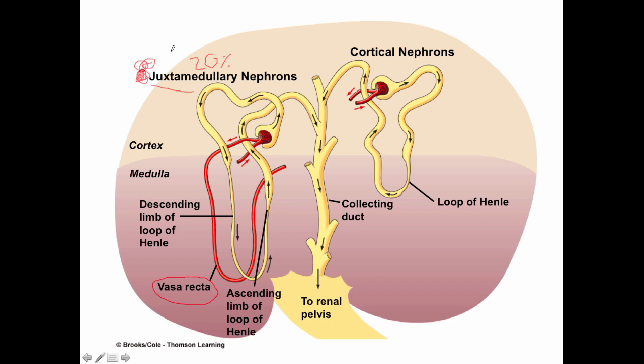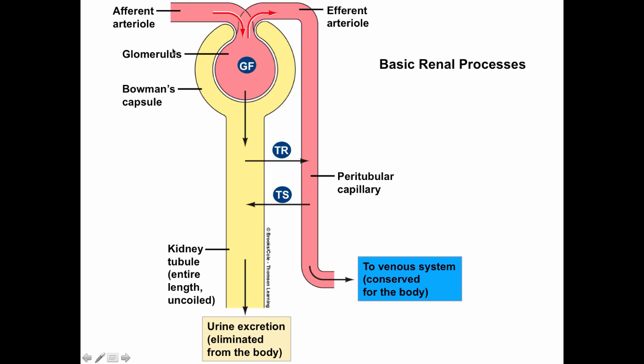We'll come back to these nephrons later when we actually talk about the mechanism for conserving water. The basic function of the kidney is to produce urine, and urine production is accomplished through three basic processes, represented by these circles with abbreviations.